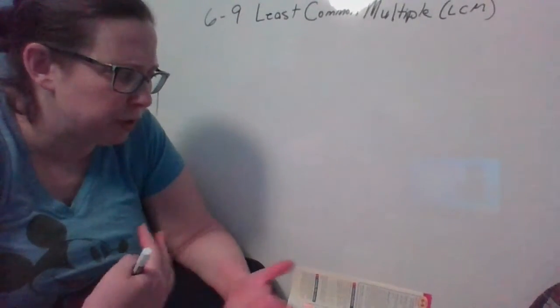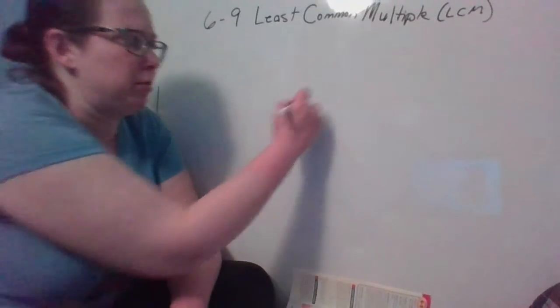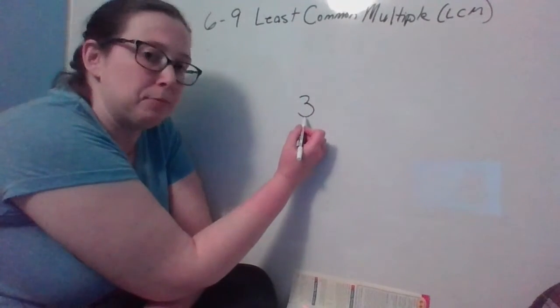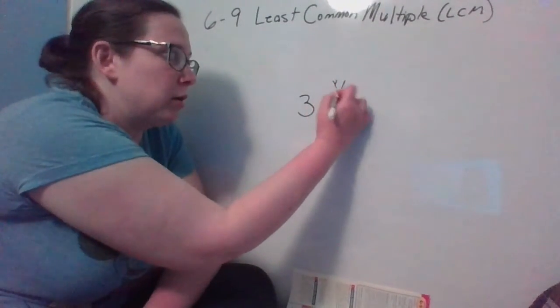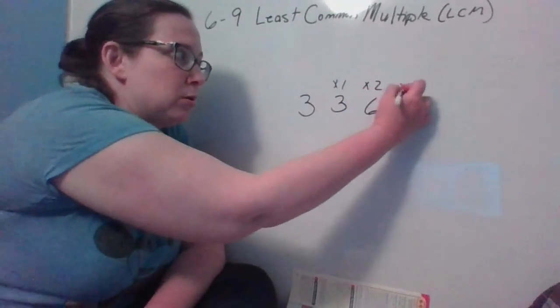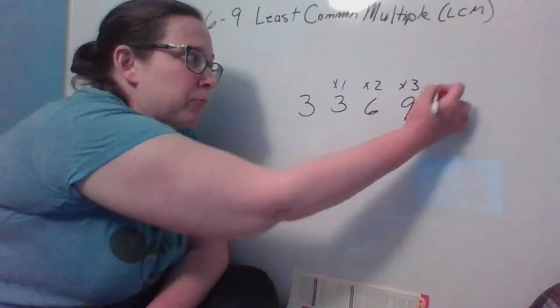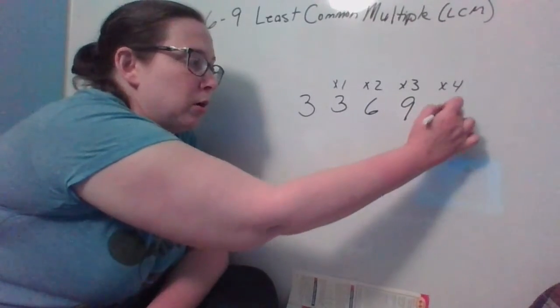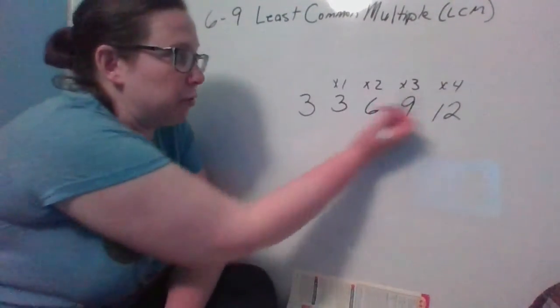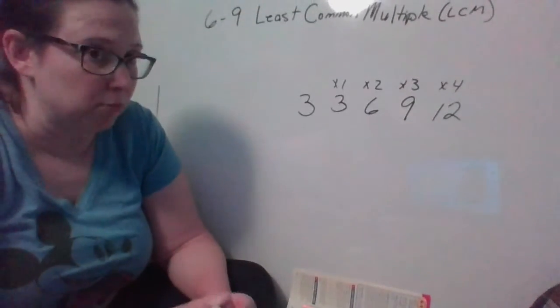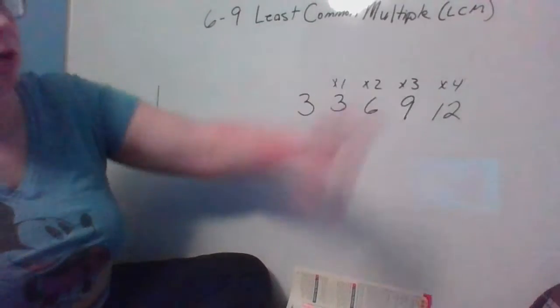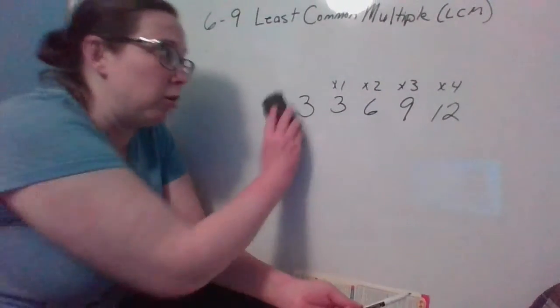So a multiple - you're going to take your number, say your number is 3. The multiples of 3 would be 3 times 1, which is 3, times 2, times 3, times 4, and they go on and on. You just keep increasing what you're multiplying or the multiplier by 1 and those would be all of your multiples.